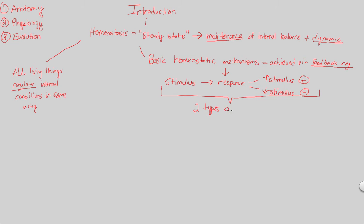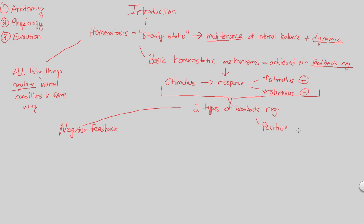We have two types of feedback regulation. Remember, what are we regulating? The internal environment. How are we regulating it? Through a feedback mechanism — a homeostatic mechanism. The two most famous types are negative feedback, which is most common and what the majority of homeostatic mechanisms within our bodies utilize, and positive feedback, which is less common but still very important. We'll do negative feedback first, with a very common example you're definitely familiar with.